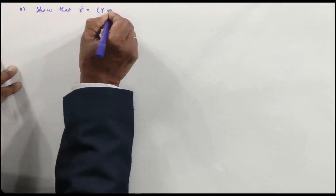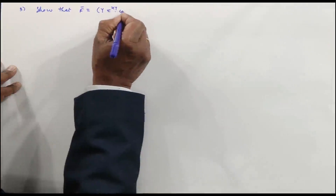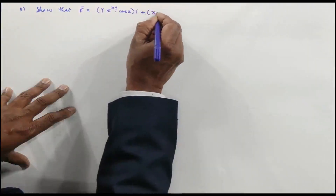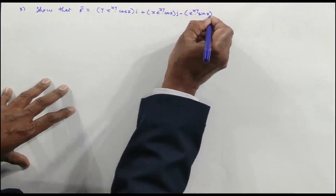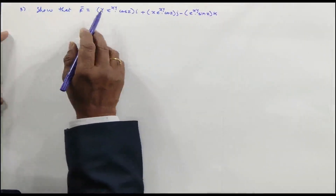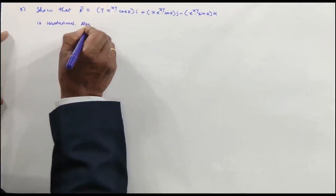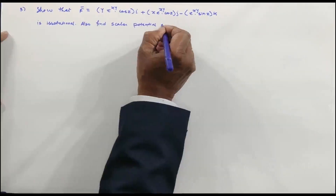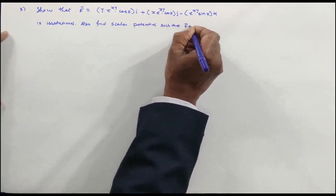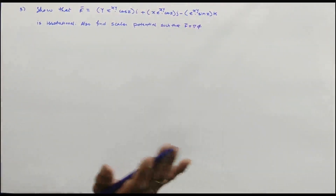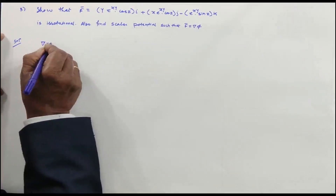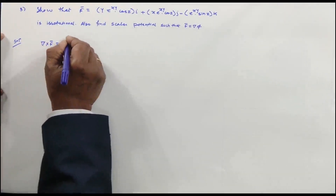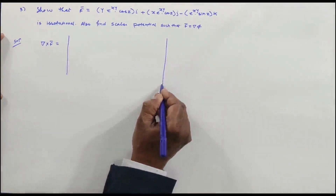The next problem: show that F̄ = ye^(xy)cosZ · i + xe^(xy)cosZ · j - e^(xy)sinZ · k is irrotational, and find the scalar potential φ such that F̄ = ∇φ. For irrotational, we calculate del × F̄ using the determinant. First two rows are standard; the third row has coefficients ye^(xy)cosZ, xe^(xy)cosZ, and -e^(xy)sinZ.